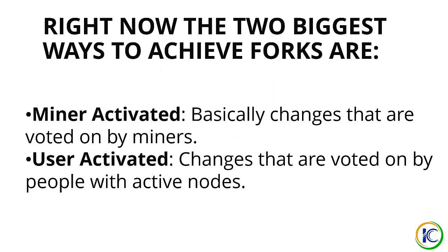The two biggest ways to achieve forks are: first, miner-activated — where miners vote for a particular fork and execute it on the network. The second way is user-activated — where people with active nodes vote and get that fork executed.